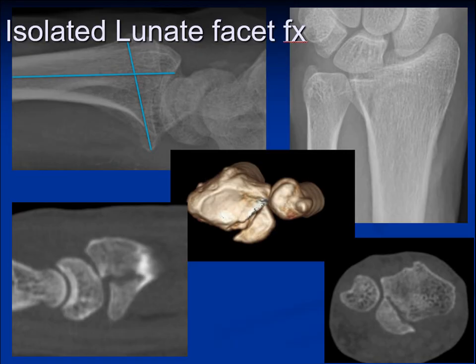In this slide, we see a rather uncommon variation of the volar marginal fracture. Here you will notice that the rest of the distal radius appears relatively intact, whereas the volar lunate facet is affected by itself. This leads to an increased teardrop angle and, as seen on the CT, the fracture fragment is restricted only to the volar lunate facet. This is the isolated lunate facet fracture.